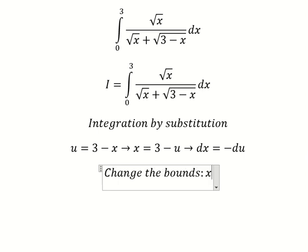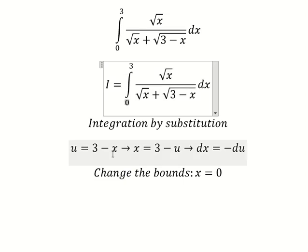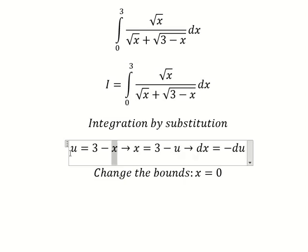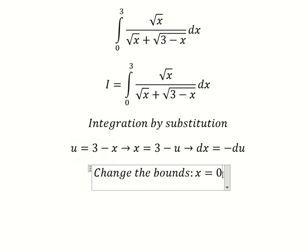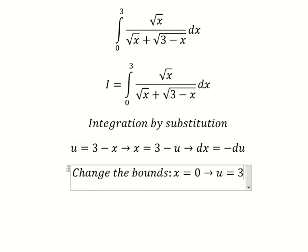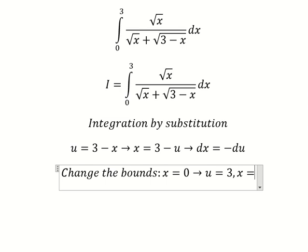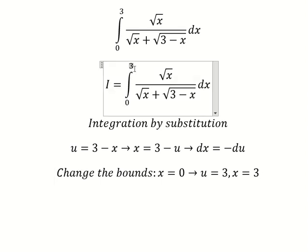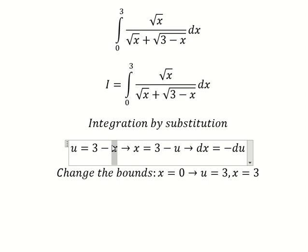When x equals zero, we put zero in here to find the value of u, which is 3. When x equals 3, we put 3 in here: 3 minus 3 equals zero.